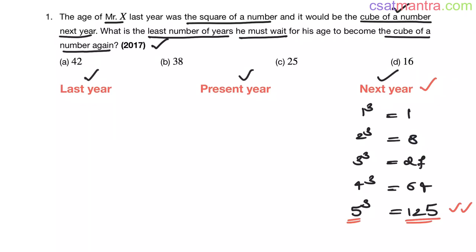Now let's see what are these ages in last year. To get last year's age, you have to subtract 2 years. So, 1 minus 2 - this is minus 1 and age cannot be negative, so ignore it.